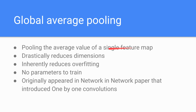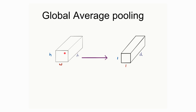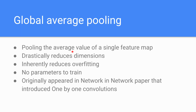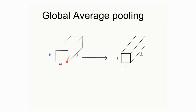Looking at the properties of the GAP layer: it pools the average value of a single feature map, where this node is the average value of that single feature map. This drastically reduces the dimensions of the input layer — our input layer is of dimensions H × W × D and the output is just 1 × 1 × D.